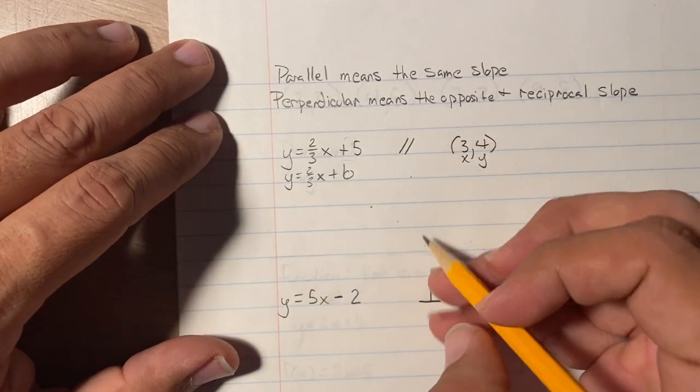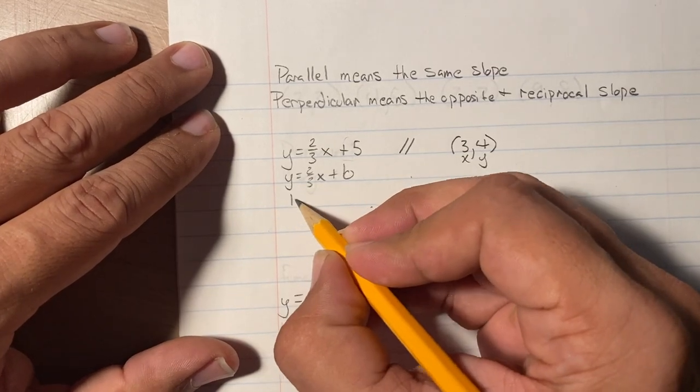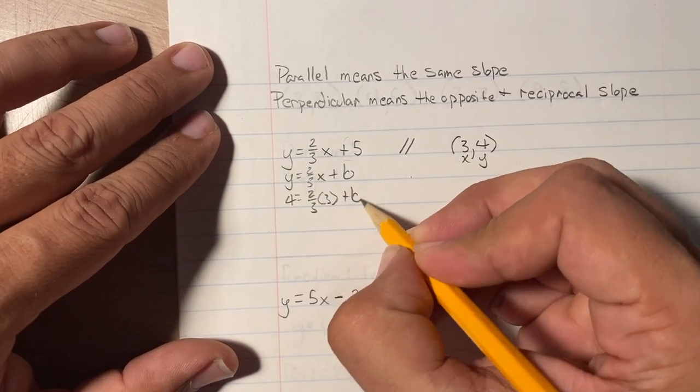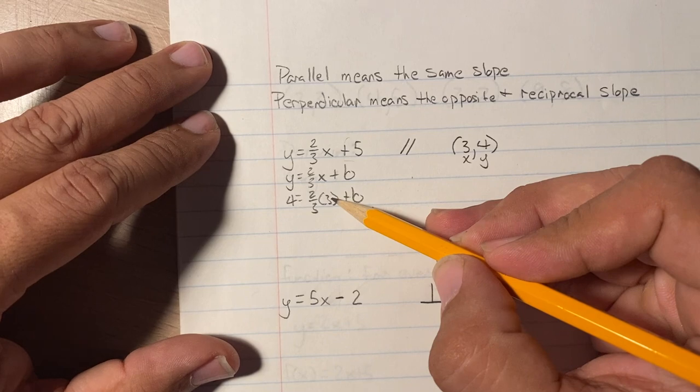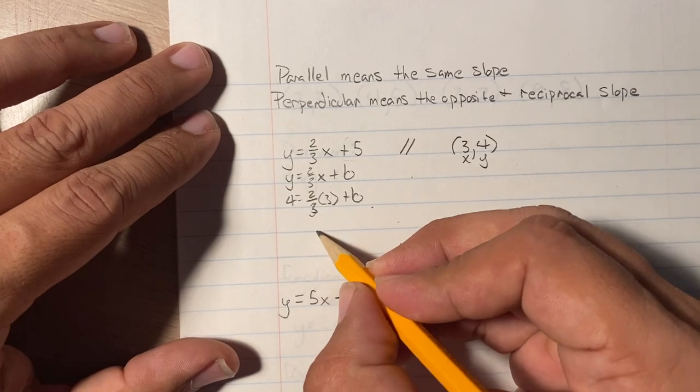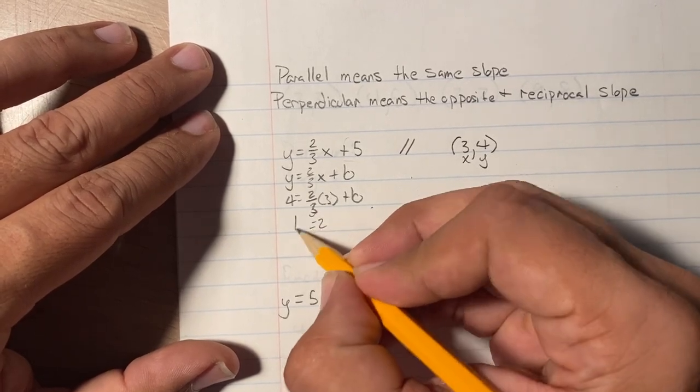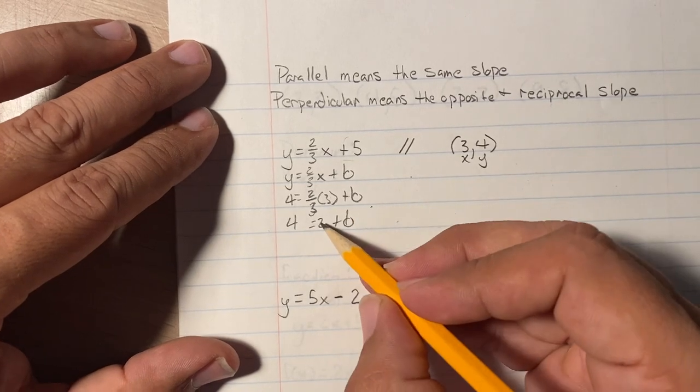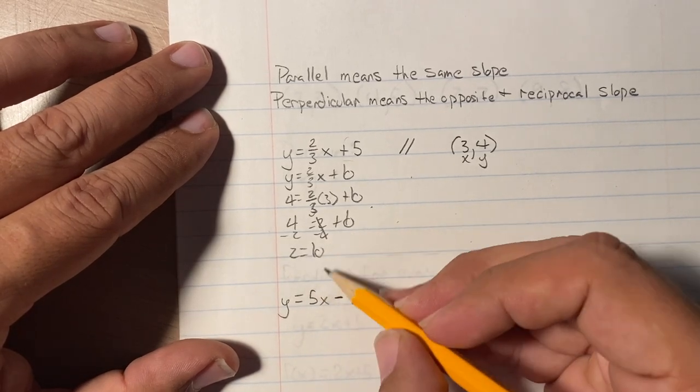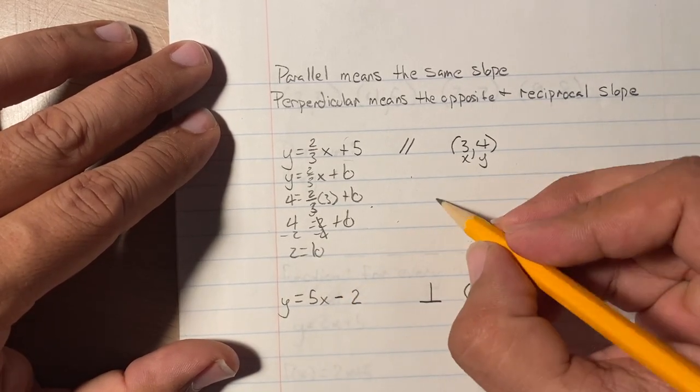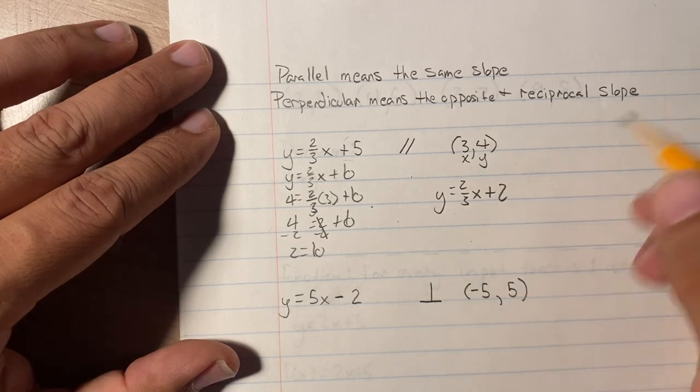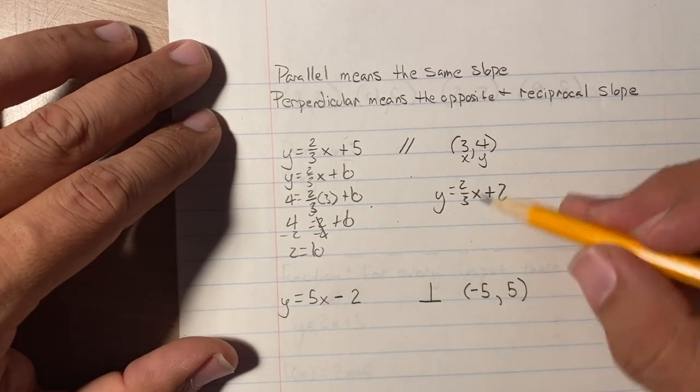We're going to plug these into the equation. So y is 4, 2 over 3, x is now 3 plus b. 2 times 3 is 6. 6 divided by 3 is 2. So this turns into 2. That's a 4 still and that's a b. If I subtract 2 from both sides, I'm left with 2 equals b. So now that I know that 2 equals b, I know that the equation is y equals 2 over 3x plus 2, because it's a positive 2. And that's it. That's how you do parallel.